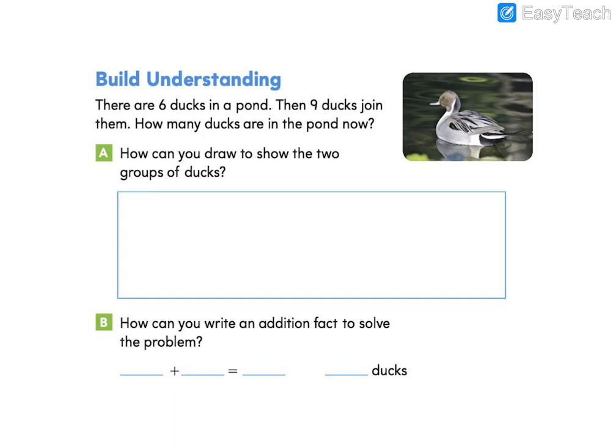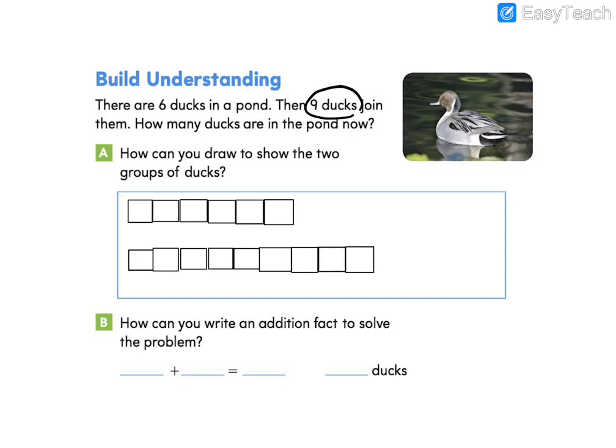Letter A asks us, how can we draw to show the two groups of ducks? So let's think about this. We have one group of six ducks and then one group of nine ducks that join. I'm going to go ahead and draw my six ducks using blocks. So there's my first six. But I know that nine more ducks join. I'm going to draw that below so that I can show the six that are in the pond and the nine that join.